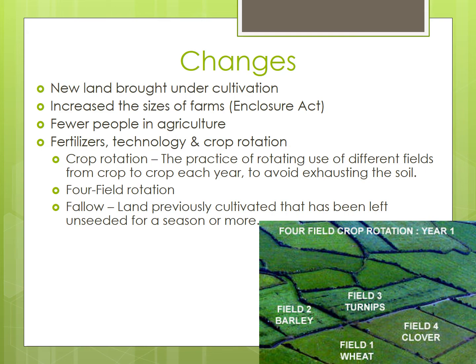The new crops that came into Europe through trade with the Americas via the Columbian Exchange, including crops like corn and potatoes, were well suited for the climate and soils of Western Europe, bringing land that was previously considered marginal or unproductive under cultivation, thereby expanding the amount of arable land.